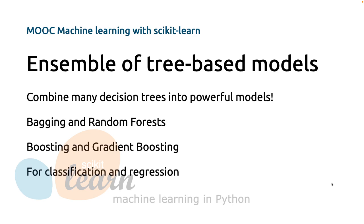There are mainly two strategies to build decision trees. The first strategy is called bagging, or bootstrap aggregating, and can be further refined into what we call random forest. The second family of ensembles for decision trees is called boosting, and can be further refined into gradient-boosted decision trees. We will see that those two strategies can be used both for classification and regression problems. But in this first video, we will focus on bagging and random forest, and I will introduce boosting and gradient-boosting in a subsequent video, and then we will contrast the two strategies.